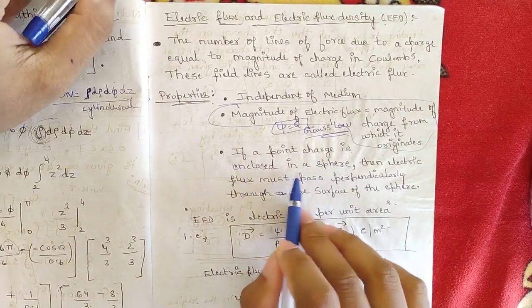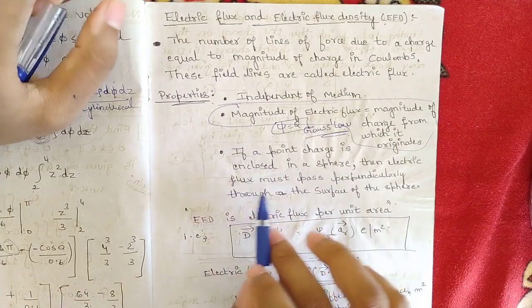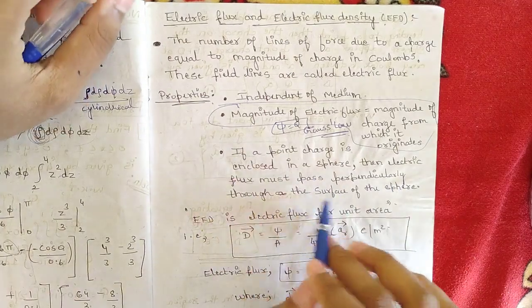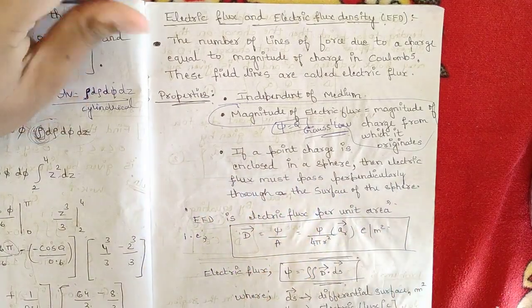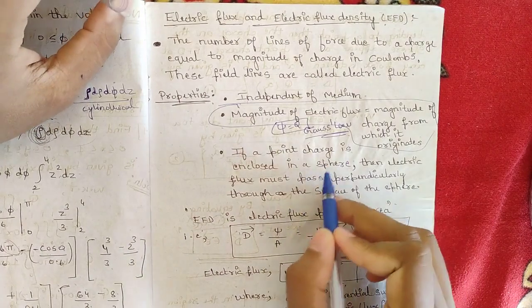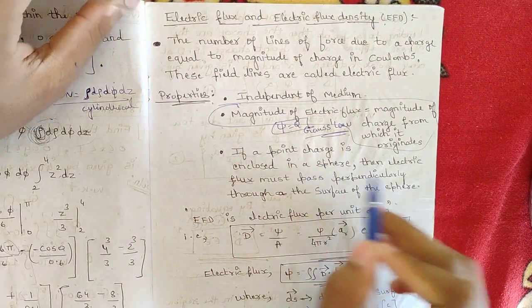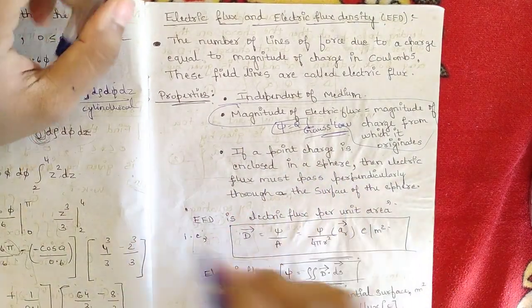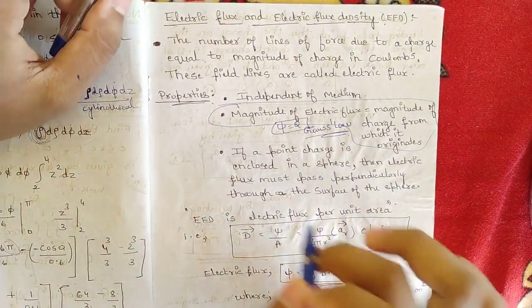The second property: if a point charge is enclosed in a sphere, then the electric flux must pass perpendicularly to the surface of the sphere. When a charge is enclosed in a sphere, the electric flux passes through the sphere perpendicularly.